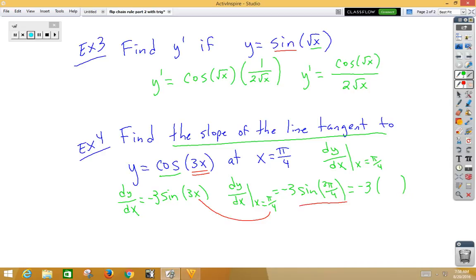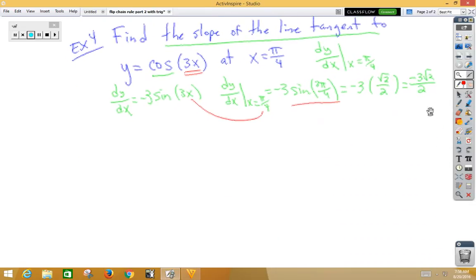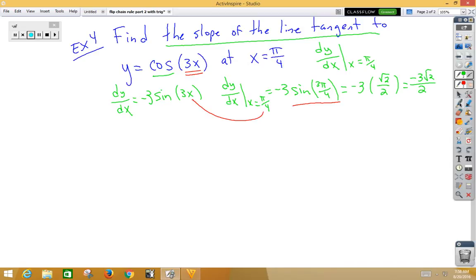Sine of 3 pi fourths is in quadrant 2. Sine is positive in quadrant 2. So that gives us radical 2 over 2. Thus our slope is negative 3 radical 2 all over 2. We're going to move this up and give us a little more room. So I've got my slope, which is negative radical 3 over 2.